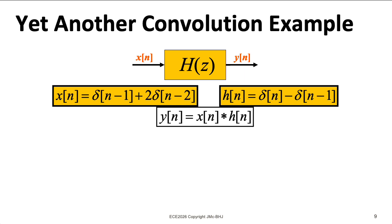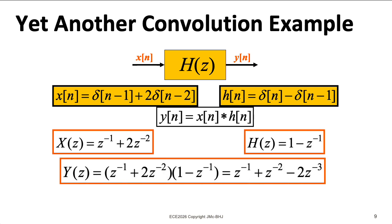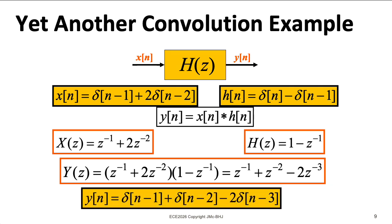Let's do another example. Here we imagine having this input X of N, and we want to convolve it with the impulse response of a system H of N. It's easy enough to take the Z-transform of X and the Z-transform of H, and when I multiply these polynomials together, I wind up with a Z-transform that I can easily invert to get this result.